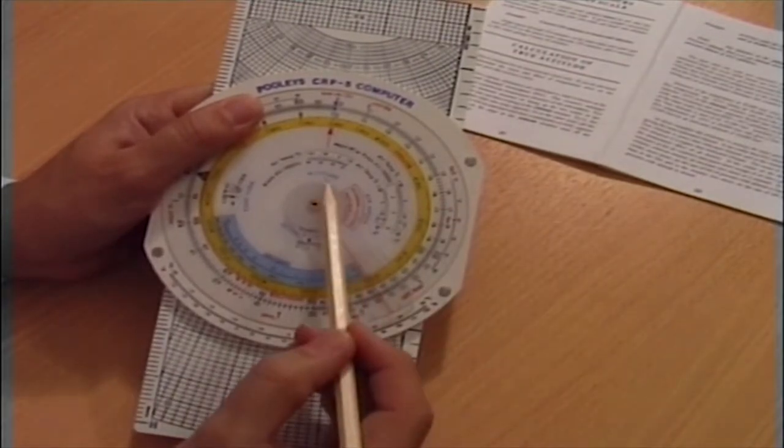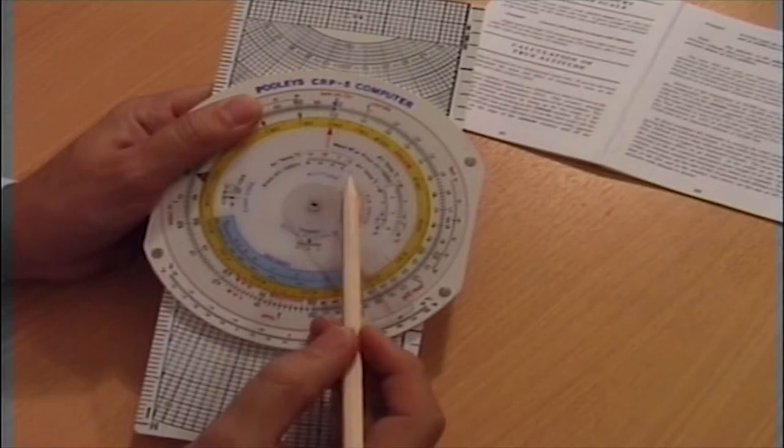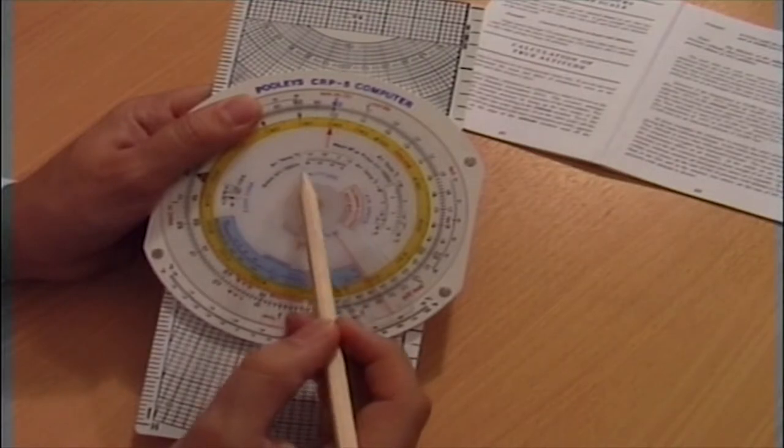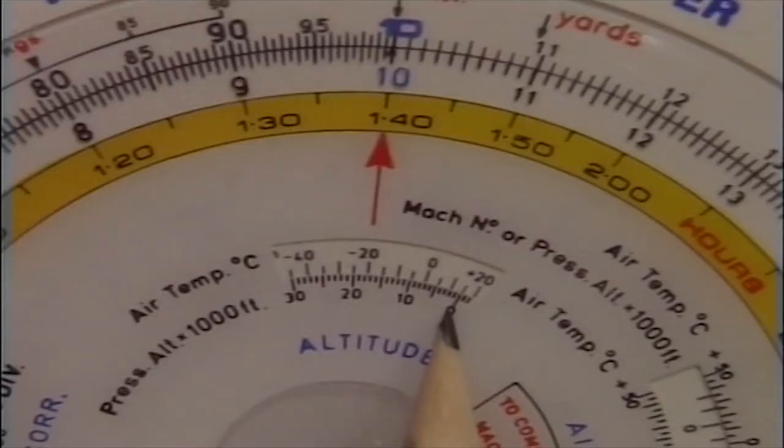Line up the 10 and the 10 and an ISA atmosphere will be created on the CRP5. At 0 feet mean sea level, the ISA temperature is plus 15 degrees Celsius and at 20,000 feet it is minus 25 degrees Celsius.